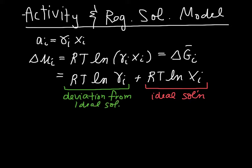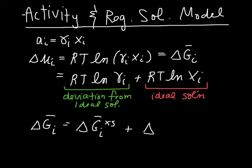We can compare this to our definition of the excess properties, where we can define delta G_I as the excess part plus the contribution from the ideal solution. Comparing the expression for delta G_I to that definition, we see that RT·ln(X_I) is the ideal solution part, and RT·ln(γ_I) is the excess part. So we're going to set this excess term equal to RT·ln(γ_I) and see how we get a relationship between the enthalpy of mixing and the activity coefficient.